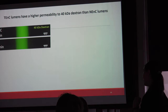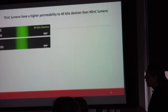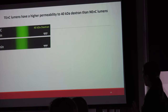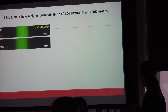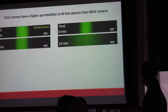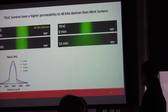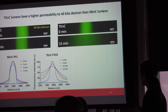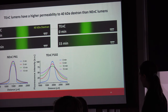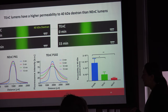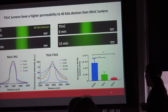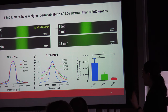To confirm whether the lumens are actually leaky, we performed diffusion assays using 40 kDa fluorescent dextran in both normal and tumor endothelial cell lumens. There was strong retention of dextran in normal endothelial lumens, whereas tumor endothelial lumens showed significant diffusion out. Plotting the fluorescence profile confirmed high retention in normal lumens versus substantial outward diffusion in tumor lumens, and the calculated permeability difference was statistically significant.